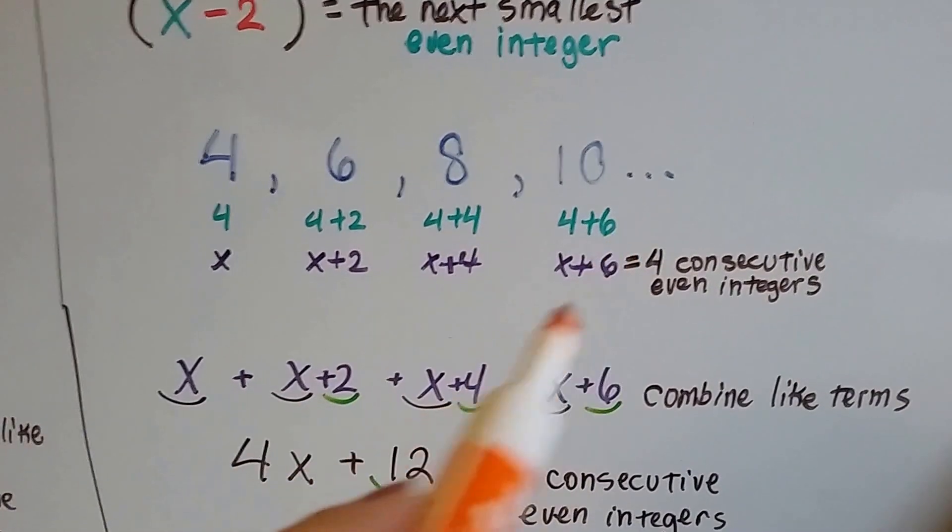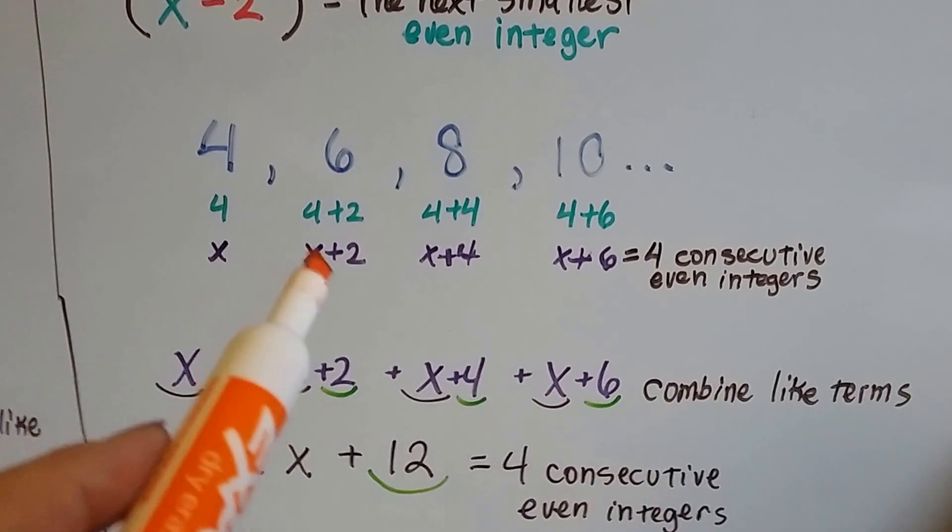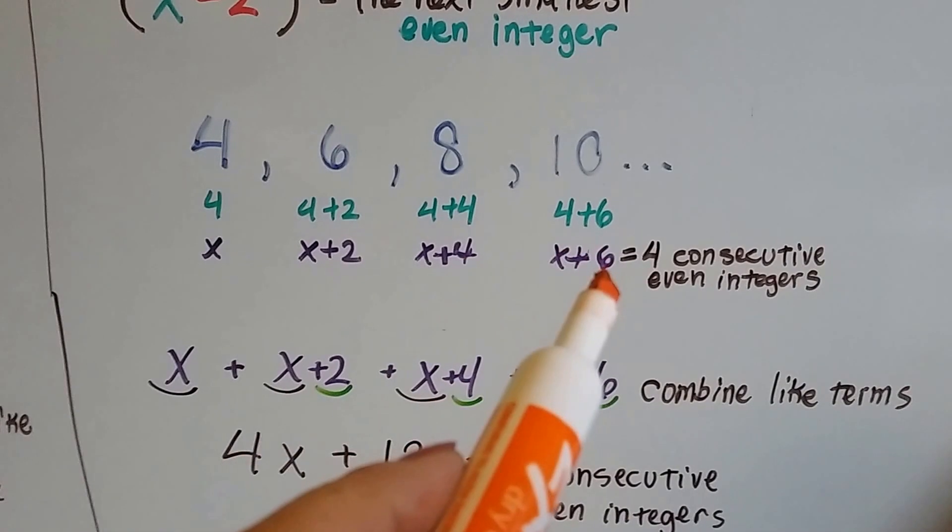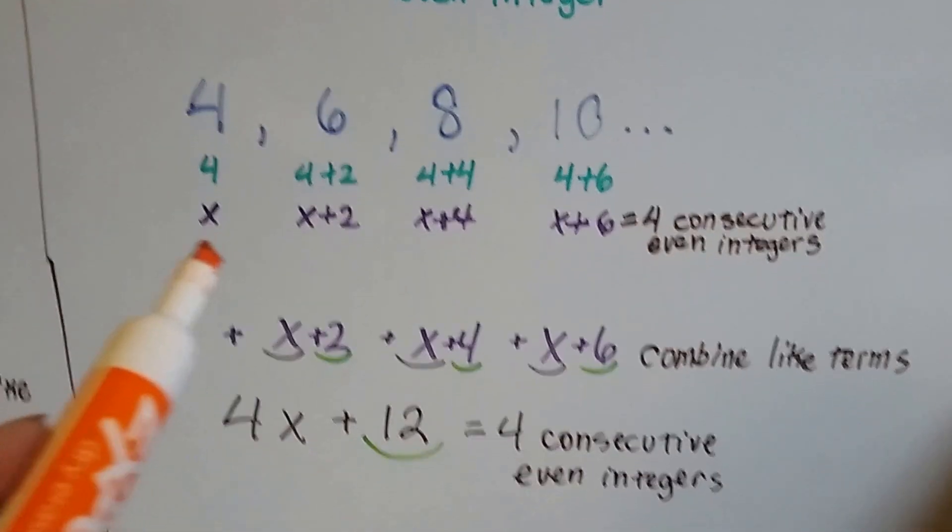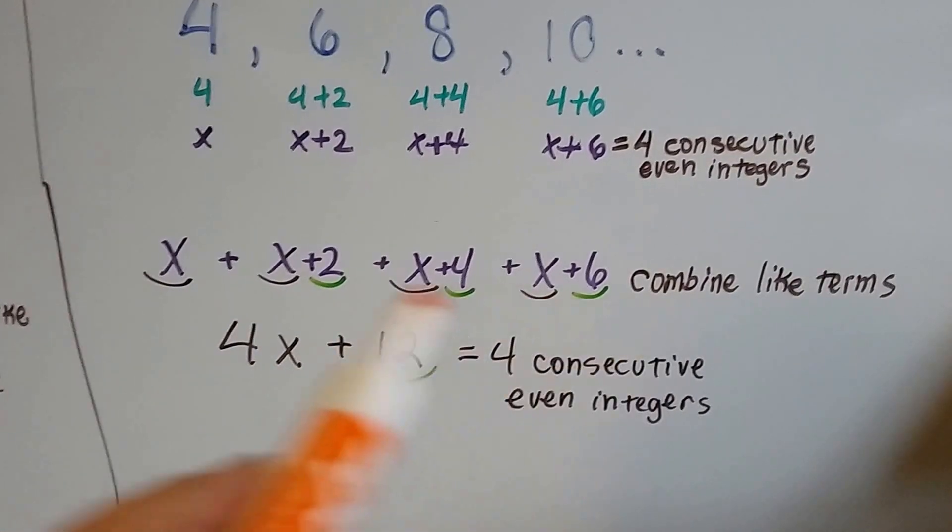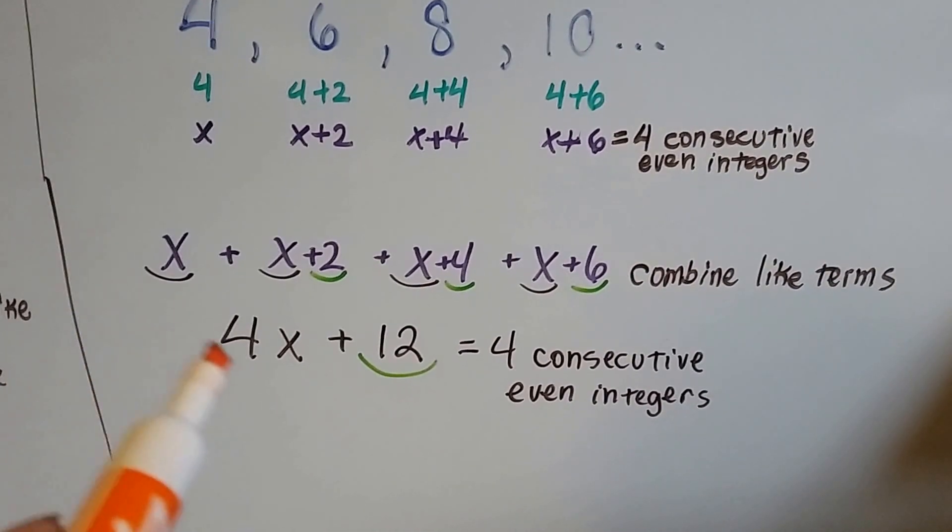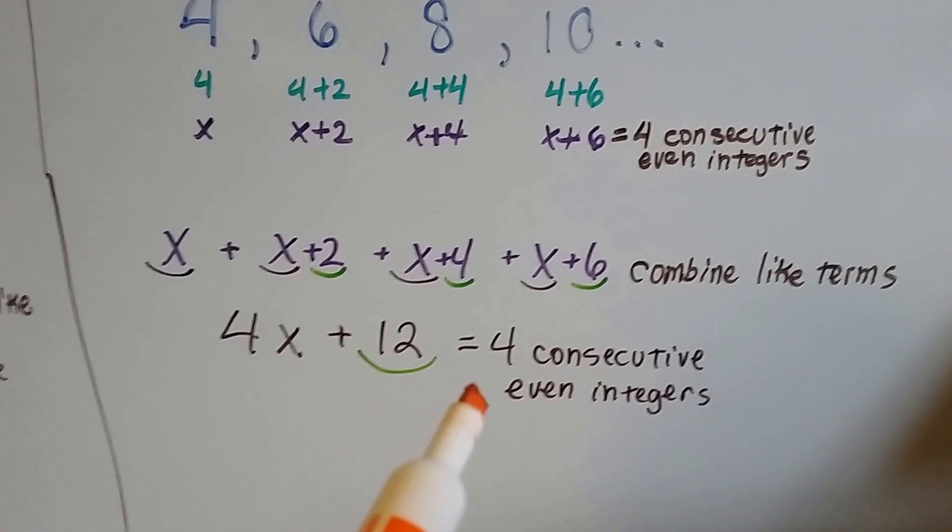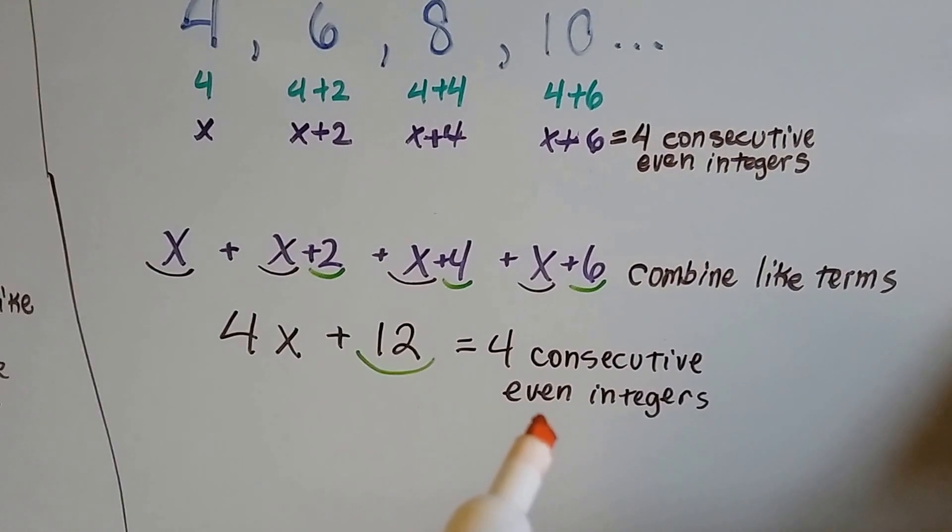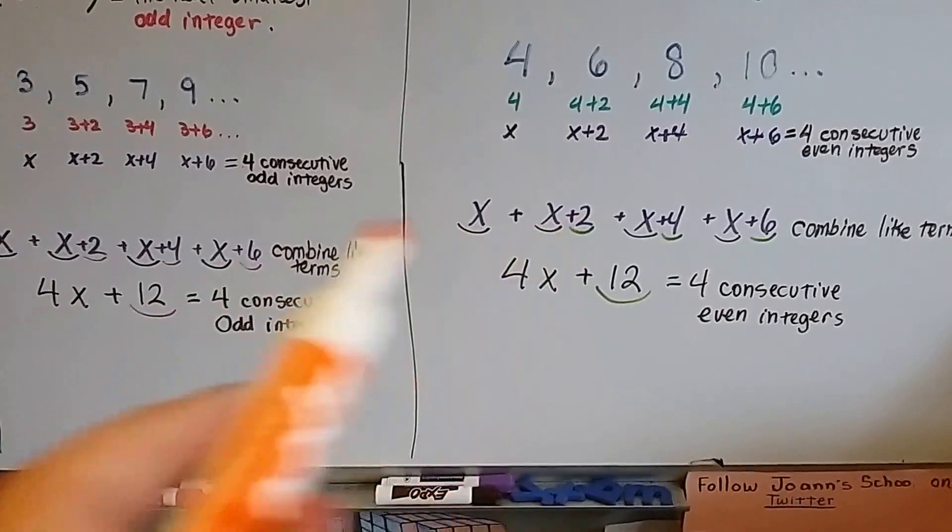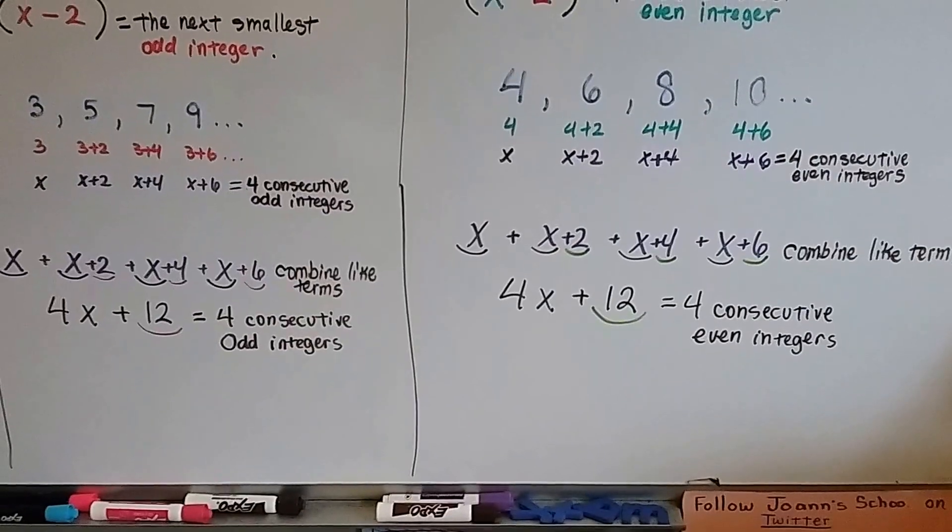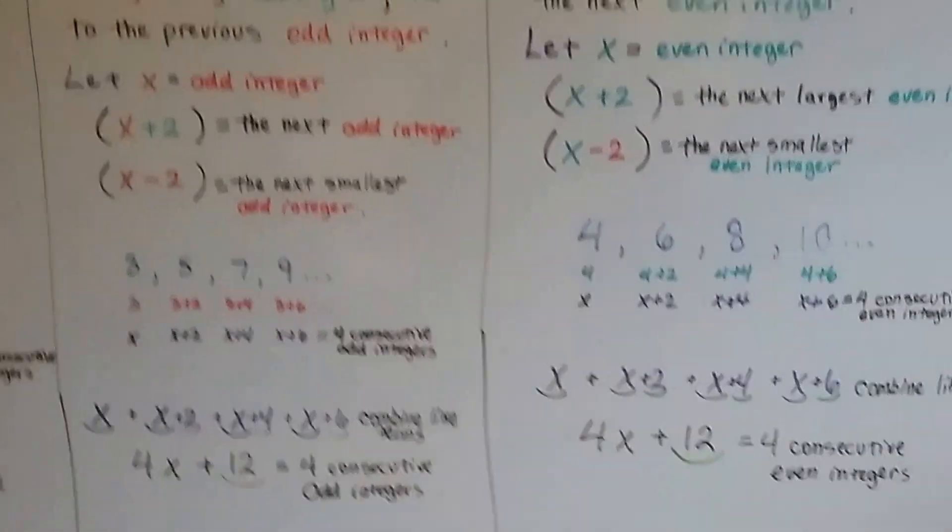And our plus number is going up by 2, 4, 6. And if we do x, and x plus 2, x plus 4, x plus 6, that gets us 4 consecutive even integers. And we can write it as an equation and combine like terms, and get 4x plus 12 equals 4 consecutive even integers, just like it got us 4 consecutive odd integers. It's the same equation, because they both skip count by 2.